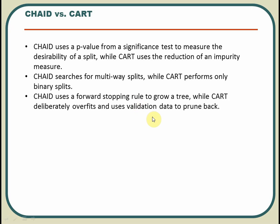CHAID uses a forward stopping rule to grow a tree — you define a rule of thumb to go only up to a certain level. CART, in contrast, can deliberately overfit and then uses validation data to prune back. That deliberate overfitting followed by pruning is a CART technique rather than a CHAID technique. That's the key difference between CHAID and CART. In the next presentation we are going to discuss some other algorithms.